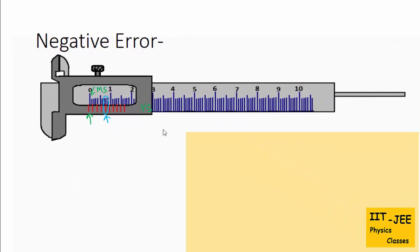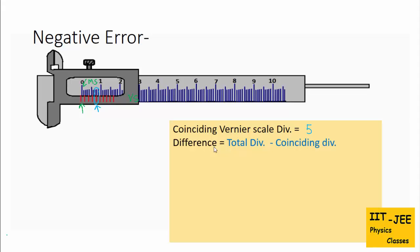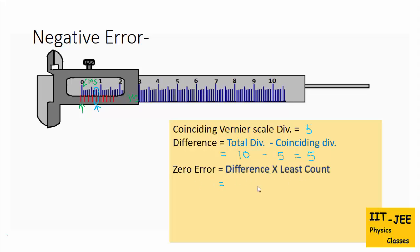The coinciding vernier scale division is 5. Now we find the difference: total number of divisions on the vernier scale minus the coinciding division — that is 10 minus 5, giving a difference of 5. We then multiply this by the least count: 5 times 0.01 cm equals 0.05 cm. As this is a negative error, we put a minus sign: −0.05 cm is the zero error of this vernier caliper.